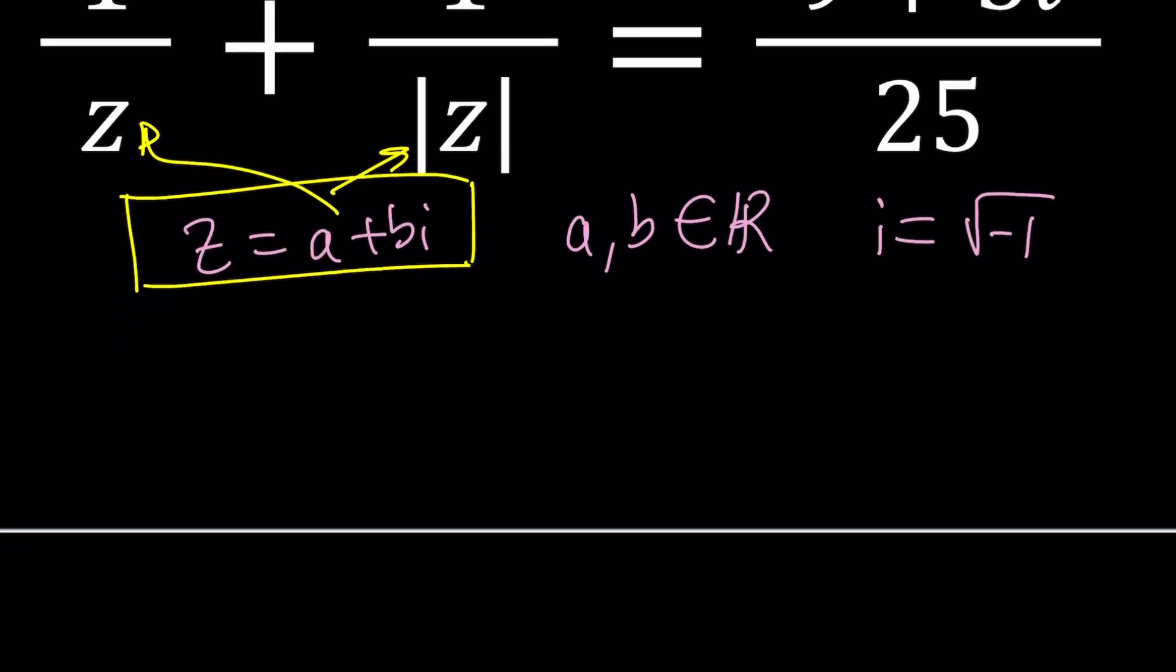But what is the absolute value of z? If z is equal to A plus B I then absolute value is defined by the distance from zero. It's always like that. So by Pythagorean theorem it's going to be the square root of A squared plus B squared. Now let's go ahead and see how we can solve this problem.